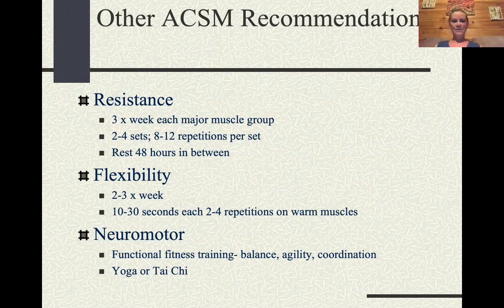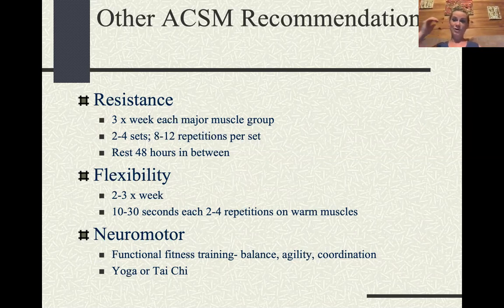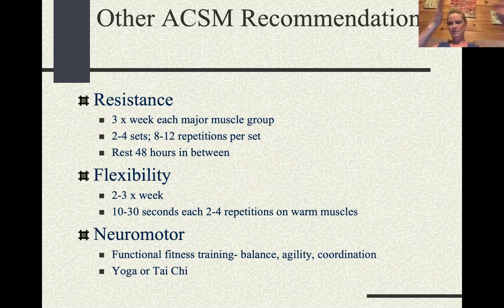Neuromotor activity includes functional fitness training: balance, agility, and coordination. Yoga is a good example — moving from pose to pose with control. A yoga teacher at ASU calls the shaking you feel in an unfamiliar pose 'the tremble of truth.' Once you build stability in that pose, you can push further and train without the trembling. Tai chi also exemplifies neuromotor balance.